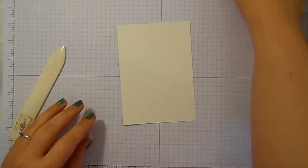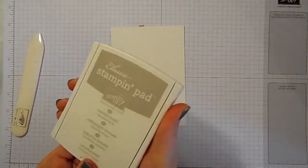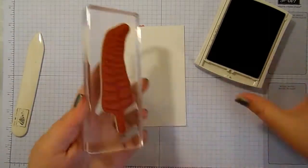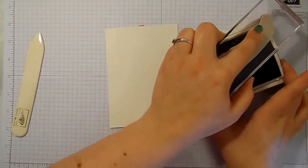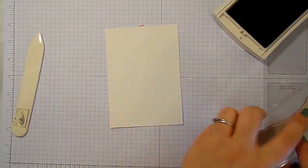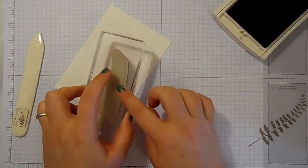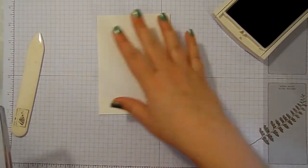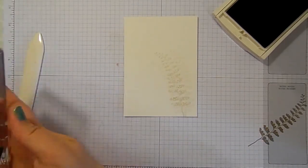And I've got my piece of watercolor paper, and I take my Sahara sand ink pad, and I have the fern mounted onto my stamp block. I'm going to stamp it off once, and then stamp it three times onto my watercolor paper.